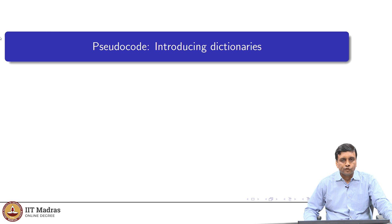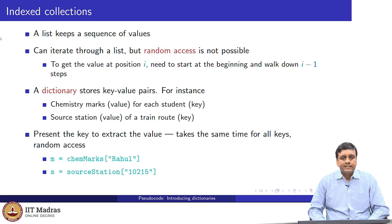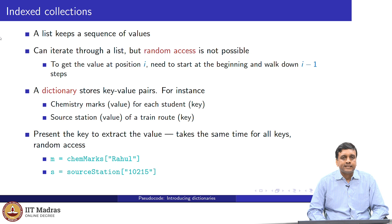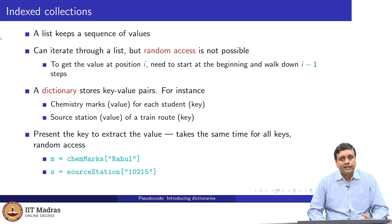In this lecture, we will introduce pseudo code for dictionaries. We have already seen indexed collections in the form of lists, which have a sequence of values we can iterate through using for each. But if we want to get to the middle of a list — say, the value at position i — there is no way except to walk through from the beginning, keeping a counter initialized to 0 and incrementing it until after i minus 1 steps the counter becomes i.